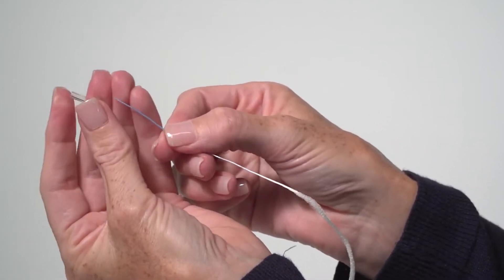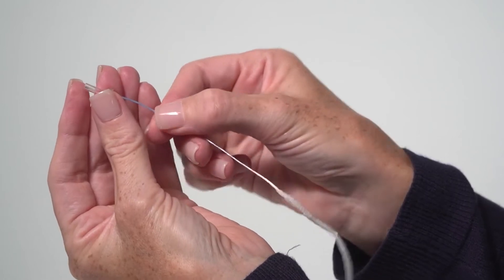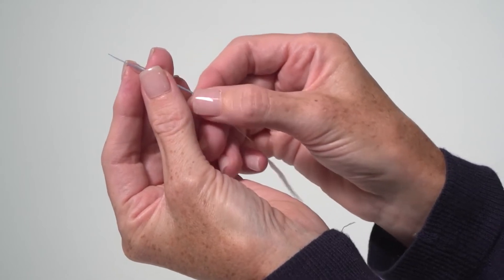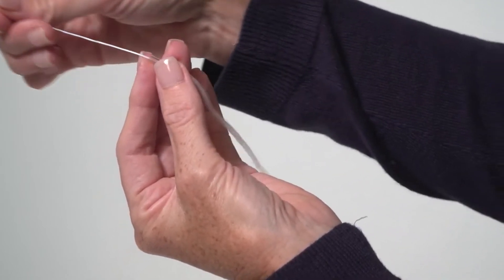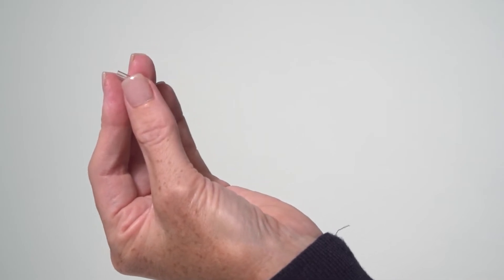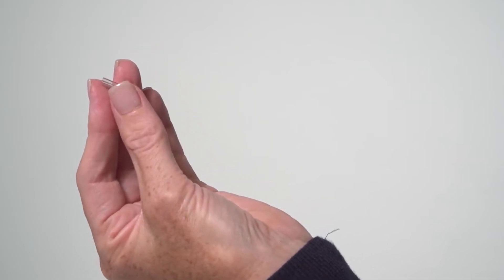Insert the blue end of the floss from back to front through one of the probe channels. Pull the floss along its entire length through the channel. Always enter the probe tube from the rear to avoid accumulation of debris inside the vents. Proceed in the same way with all probe channels.